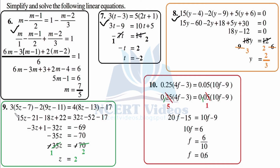Question 9: 3 is getting multiplied with (5z minus 7) minus 2 is getting multiplied with (9z minus 11), equals 4 is getting multiplied with (8z minus 13) minus 17. Whenever we observe brackets we first open them. 3 times 5 is 15, so 15z; minus 3 times 7 is 21; minus 2 times 9z is minus 18z; minus times minus is plus, so plus 2 times 11 is 22. Equals 4 times 8z is 32z; plus times minus is minus, so minus 4 times 13 is 52; minus 17 as it is. We can simplify mentally rather than writing every step.